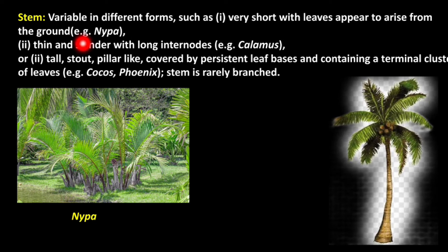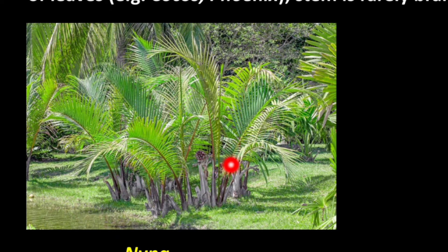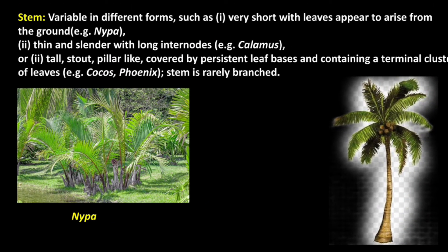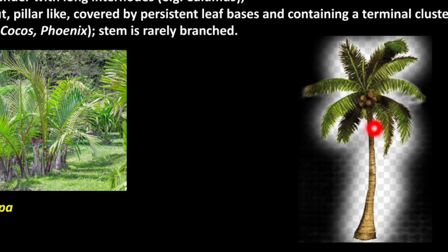Coming to stem: the stem in arborescent species is variable. It may be very short, with leaves appearing to arise from the ground, as in Nypa. The stem may be thin and slender with long internodes, as in Calamus. Or the stem may be tall, stout, and pillar-like, covered by persistent leaf bases and bearing a terminal cluster of leaves, as in Cocos and Phoenix.